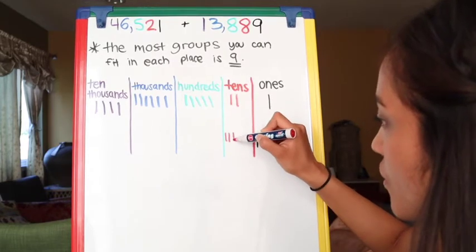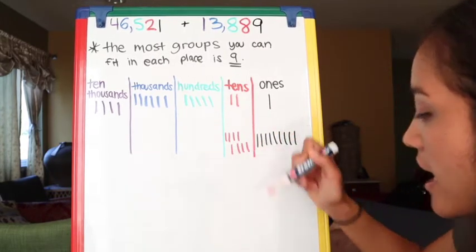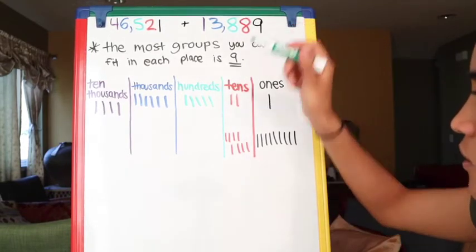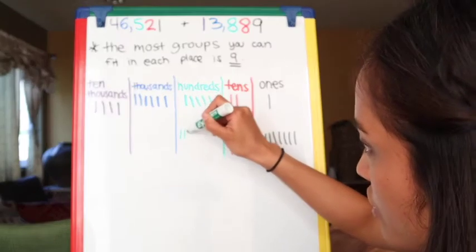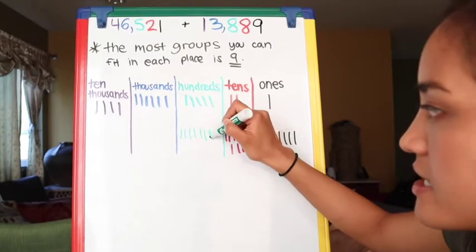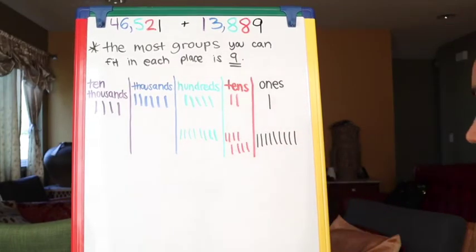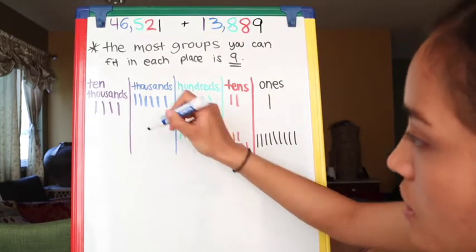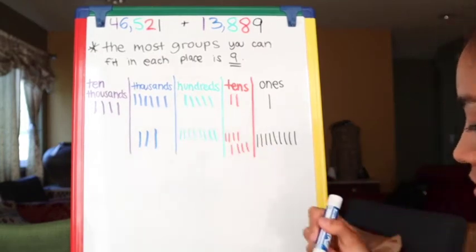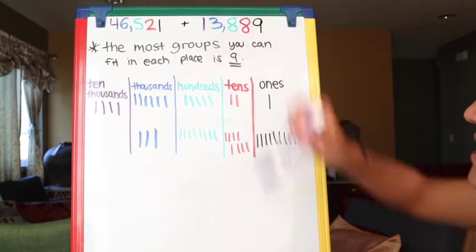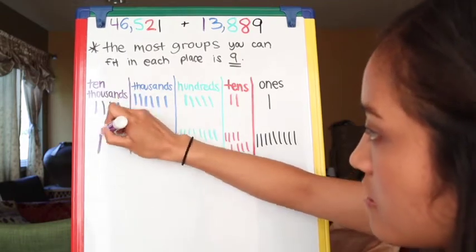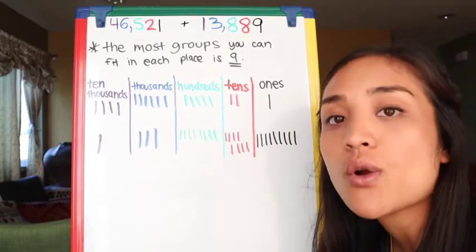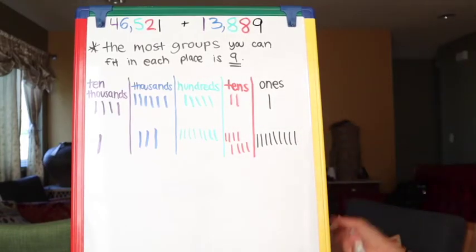One, two, three, four, five, six, seven, eight. Then hopping on over to the hundreds place, we also have eight — one, two, three, four, five, six, seven, eight. Thousands place: three — one, two, three. And last but not least, ten-thousands place, we just have one.